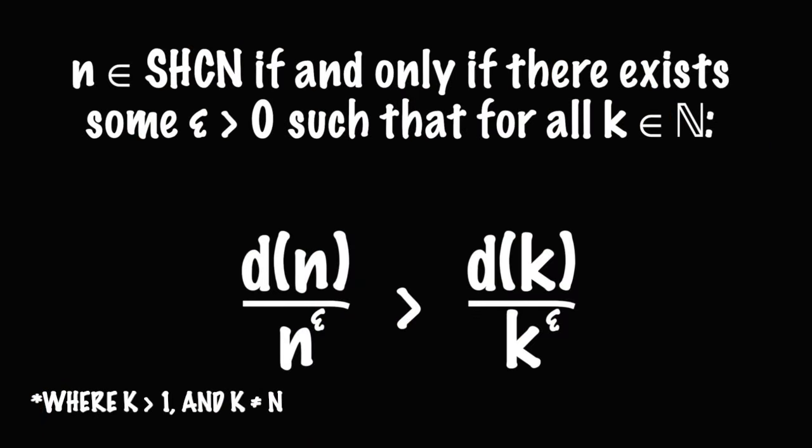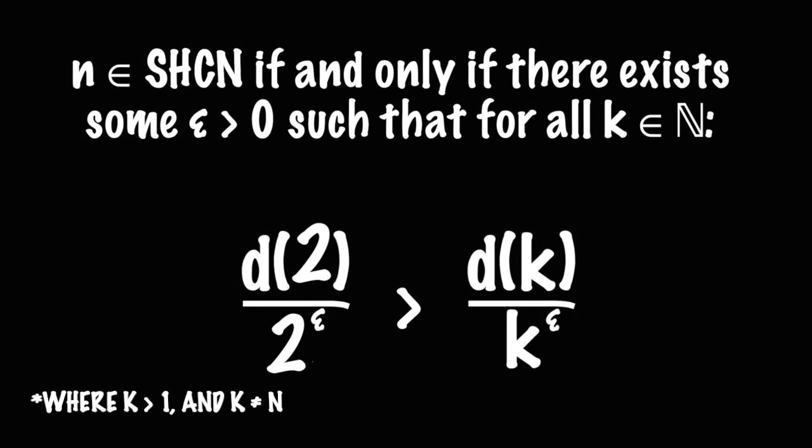In fact, once you start to dissect what all these words mean, it's pretty straightforward. Let's go ahead and work through a brief example, and then you can see how it works. We'll use the smallest SHCN, the number 2.